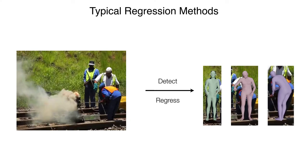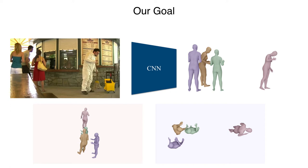Our work addresses the problem of coherent multi-person 3D pose estimation from a single image. Typical top-down regression methods first detect humans in a scene, then reconstruct each one of them independently, which often leads to incoherent results. Our goal is to train a single network for this task that learns to avoid these problems and generate a coherent reconstruction for the scene.